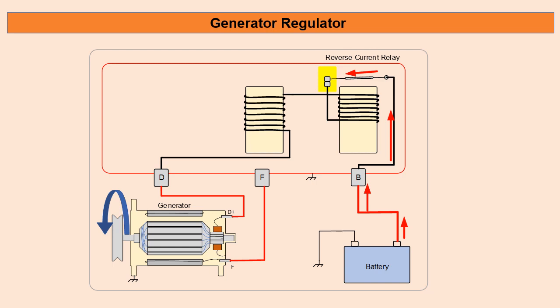What you can see here is the current flowing through the reverse current relay is opposite to the charge current. This then cancels out the magnetic field and the reverse current relay opens again.